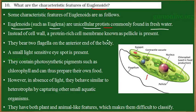They are unicellular in nature and, like plants, they do not have a cell wall. Cell wall is absent, but instead the cell membrane is covered by a structure called pellicle, which is made up of a protein-rich membrane.